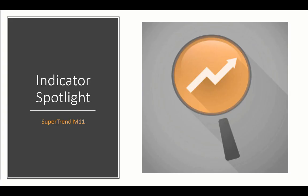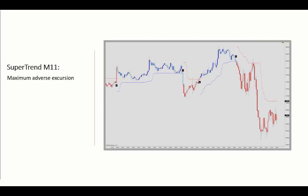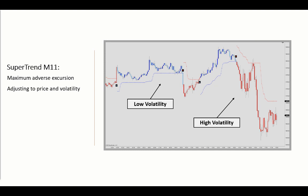This time we're talking about the Supertrend M11 indicator, which is a trailing stop built from a baseline and a volatility offset. It is an enhancement of the maximum adverse excursion concept introduced by John Sweeney in the mid-90s, most commonly applied as a trailing stop indicator, adjusting to both price and volatility.